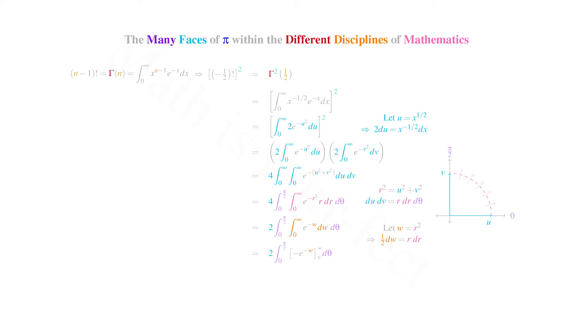Anti-differentiating gives us minus e to the minus w evaluated from 0 to infinity, which simplifies to 1. Taking the limit as w becomes infinite of negative 1 over e to the infinite gives us 0, hence positive 1 over e to the 0, or 1, is all that remains. As this is a constant function, the value of the exterior integral with respect to theta is simply the distance between the end points, namely pi over 2.